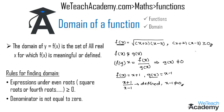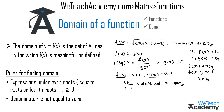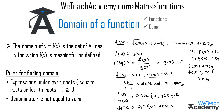If the domain of y = f(x) is D1 and the domain of y = g(x) is D2, then the domain of f(x) ± g(x) and f(x)·g(x) is D1 ∩ D2. The domain of f(x)/g(x) is D1 ∩ D2 for x such that g(x) ≠ 0. The domain of √f(x) is D1 ∩ {x : f(x) ≥ 0}.